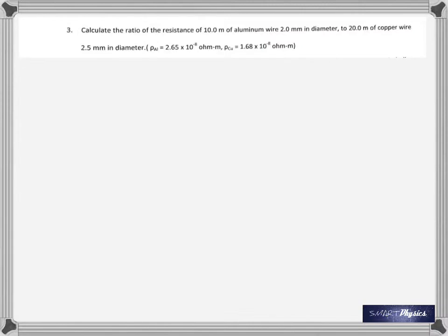Number three: calculate the ratio of the resistance of 10 meters of aluminum wire, 2 millimeters in diameter, to 20 meters of copper, 2.5 millimeters in diameter. You're given the resistivities of aluminum and copper. Now this is a comparison problem, you got to find the ratio. So let us set it up as a ratio. We know resistance is rho L by A. Therefore, for aluminum it's going to be the rho of aluminum times the length of aluminum by the area of cross section. For copper it's going to be the same thing. So when you divide one by the other, this is what you're going to get.